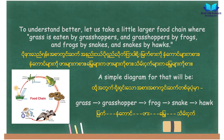To understand better, let us take a slightly larger food chain where grass is eaten by grasshoppers, and grasshoppers by frogs, and frogs by snakes, and snakes by hawks. A simple diagram for that will be: grass to grasshopper, grasshopper to frog, frog to snake, and snake to hawk.